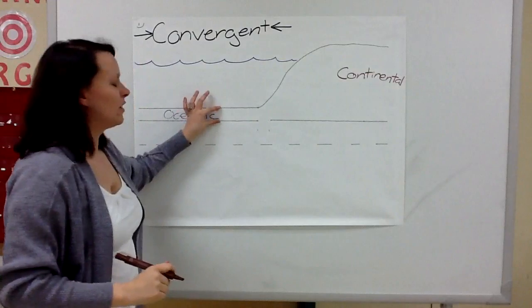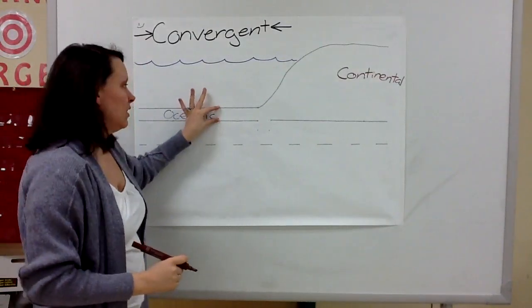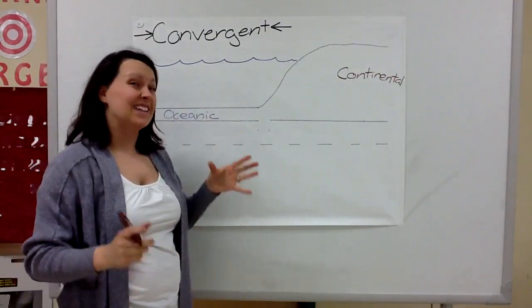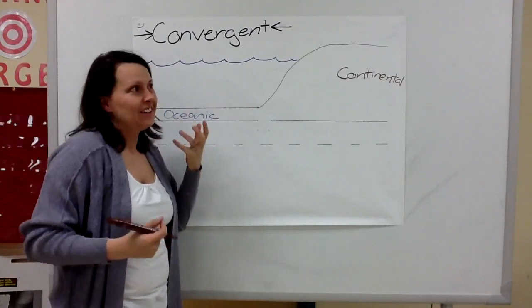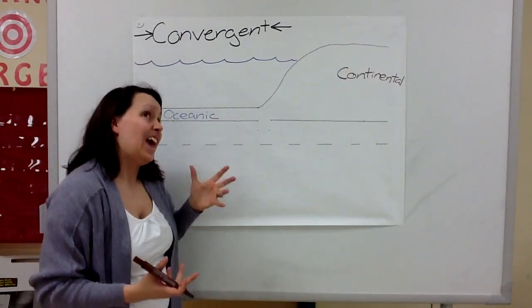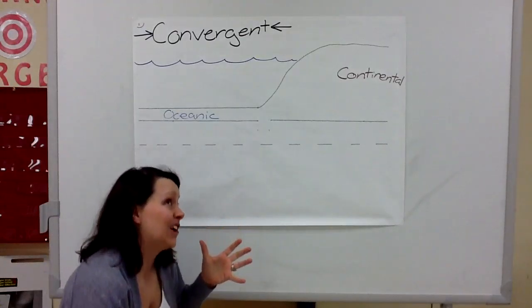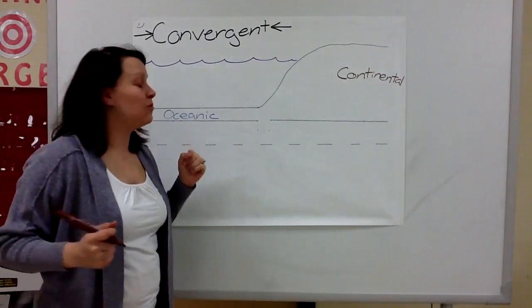Notice that the oceanic crust is a lot thinner, but it's a lot denser, which means that there's more particles packed into it. It's heavier, and that's going to be really important.